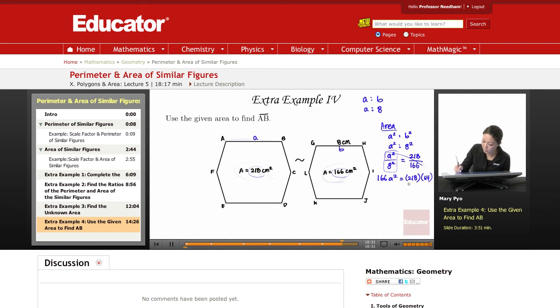So from here, you can just divide this 166. A squared equals, and you can just use your calculator, 218 times 64, divide that number by 166. And I get 84.05.